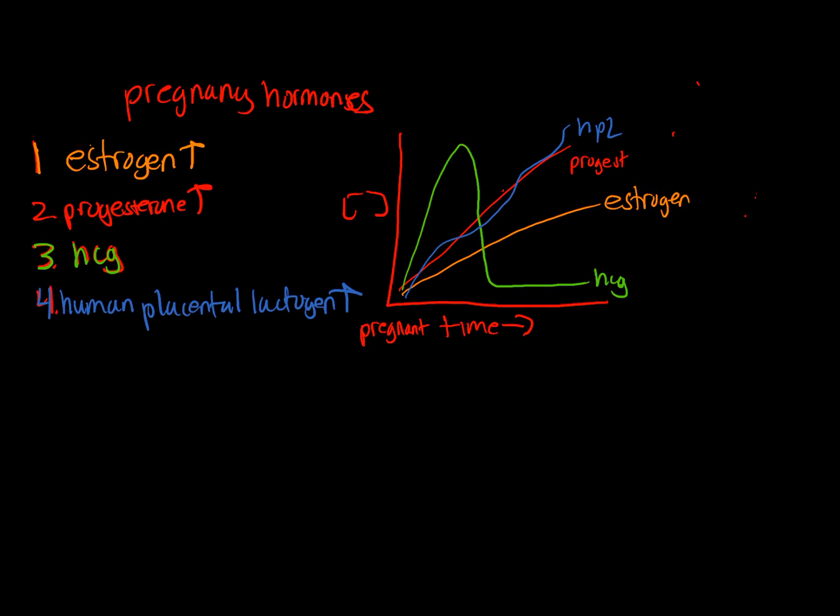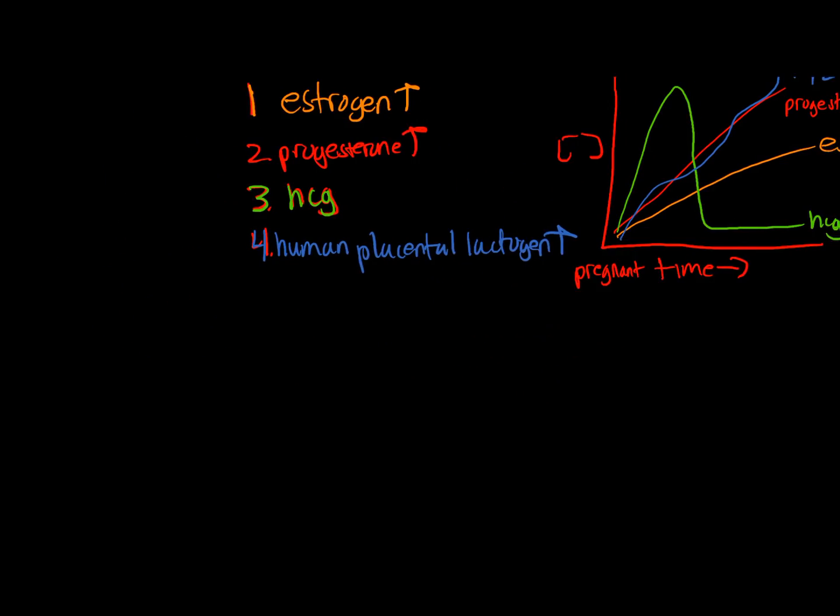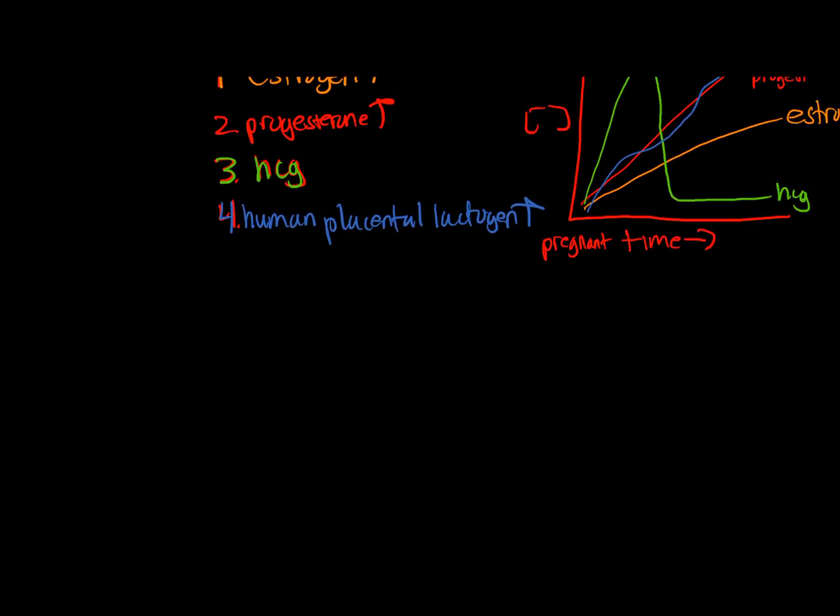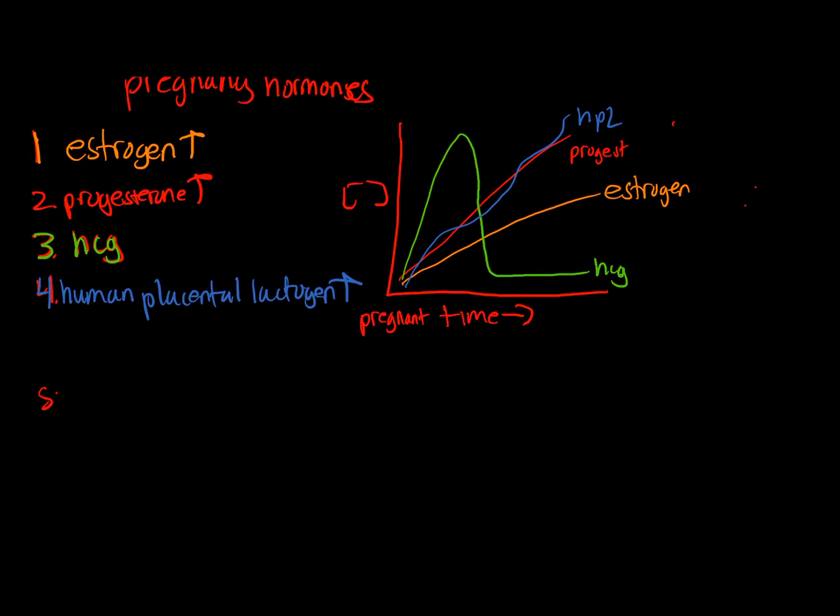And now we're going to talk about HCG a little bit. HCG and human placental lactogen both come from syncytial trophoblast. Remember, those are cells in the placenta. So we're going to make some HCG. And remember, the HCG is very similar to, the alpha subunit is very similar to FSH, LH, and TSH. And so it's going to mimic LH, and it's going to maintain the corpus luteum.